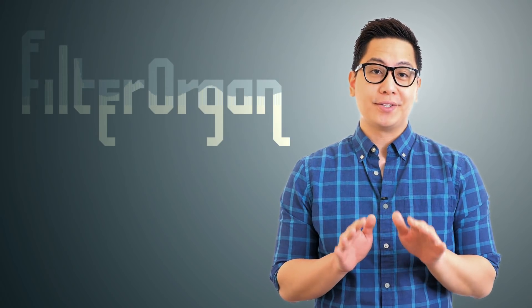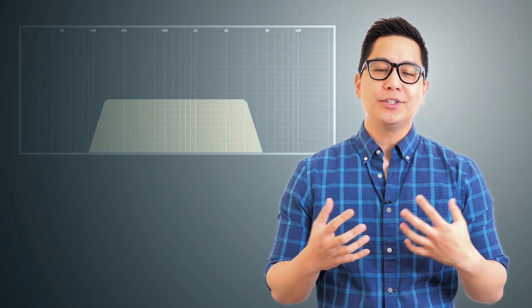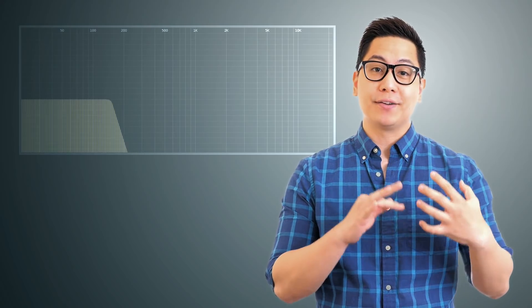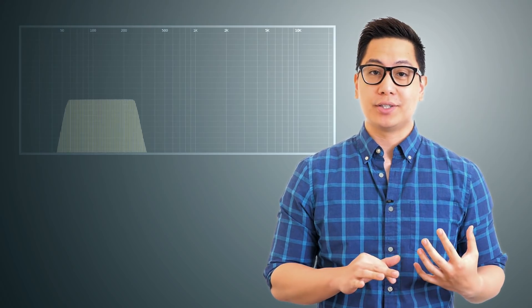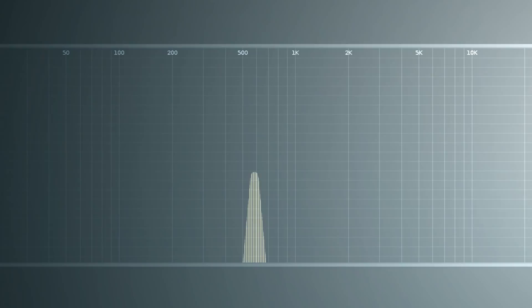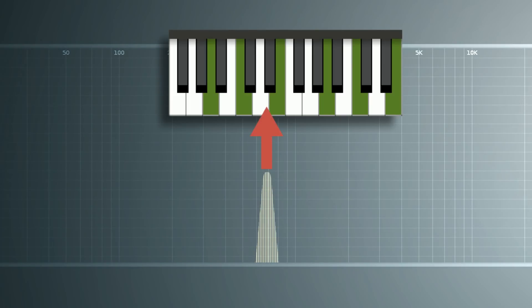Hi! In this video, I'm going to introduce Filter Organ 2. You are right to assume this has something to do with audio filters. This is the well-known sound of a filter sweeping through the spectrum and boosting different frequency ranges. I would like to call your attention to the fact that the filter's frequency has nothing to do with the harmonies in the music.